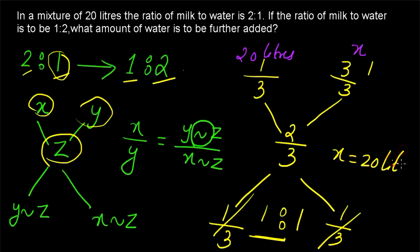So 20 liters of water is to be added to convert the ratio of milk to water from 2 is to 1 to 1 is to 2.